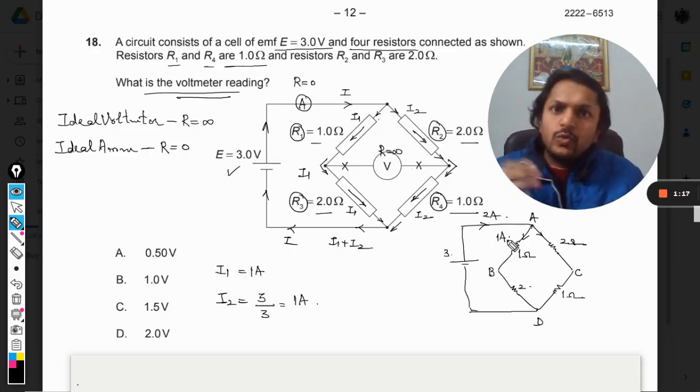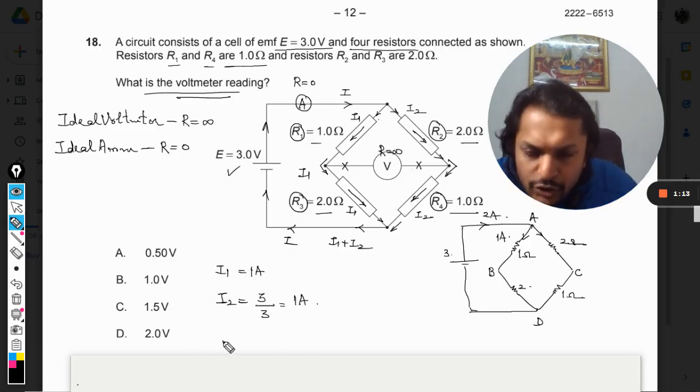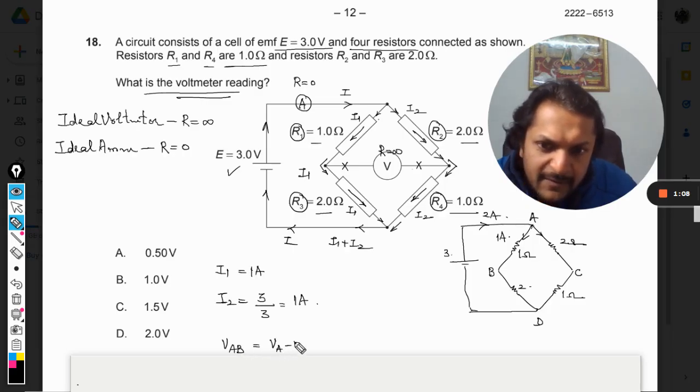Now I want to find the potential difference between A and B, so it is like Va minus Vb. So Va minus Vb will be V equals IR here, so the current here is 1 into 1, this one and this one. So it will be 1 volt.